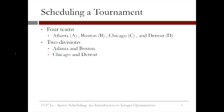Let's look at how sports scheduling can be done with optimization by starting with a small example. Suppose we're trying to schedule a tournament between four teams: Atlanta, Boston, Chicago, and Detroit. We'll call these teams A, B, C, and D. These teams are divided into two divisions — Atlanta and Boston are in one division, and Chicago and Detroit are in the second division.